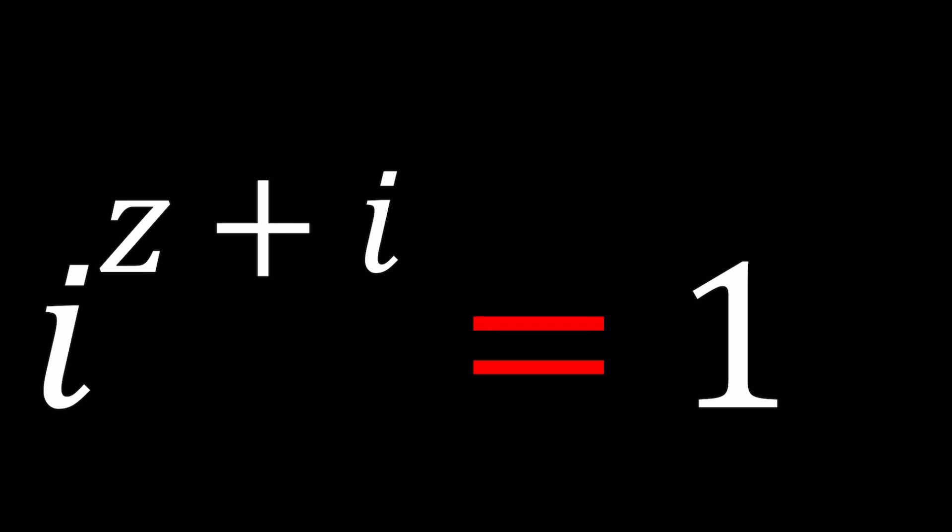You can call it an imaginary complex equation as well. We have i to the power z plus i equals one and we're supposed to solve for z. Now this equation kind of looks complicated right? No not really. Let me show you something.